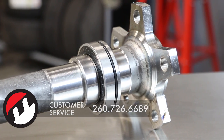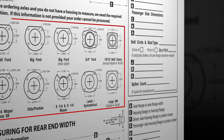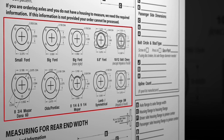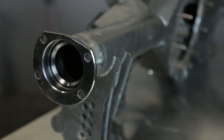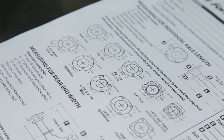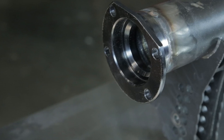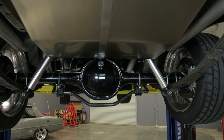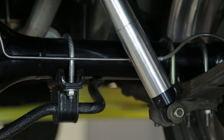Once you've identified your housing type, it's time to do the same thing for the housing ends. The order form shows the most commonly used ends, and you may be tempted to simply compare the illustrations to your existing ends. This is a bad idea. Year-to-year manufacturing variations, an axle housing with aftermarket ends, or a host of other factors can cause misidentification.